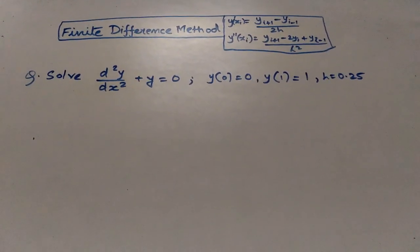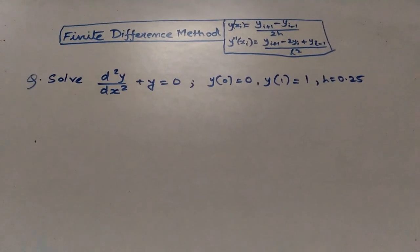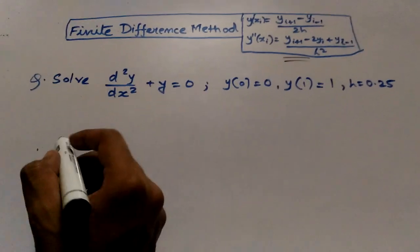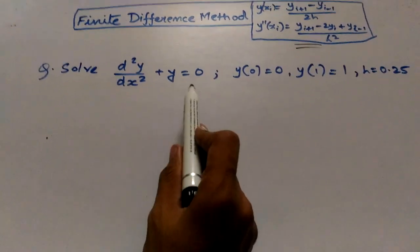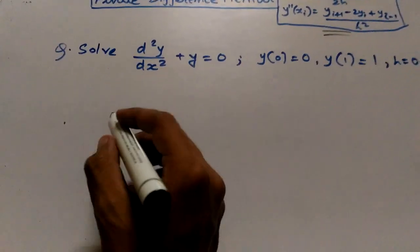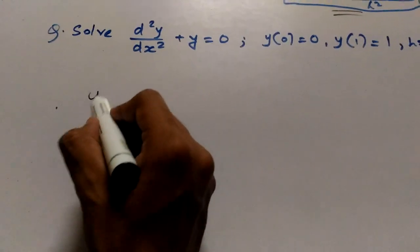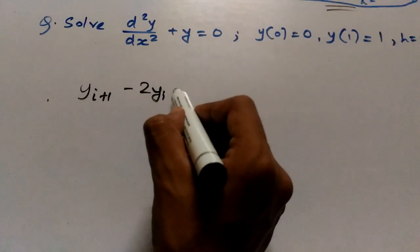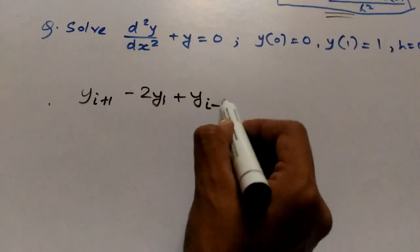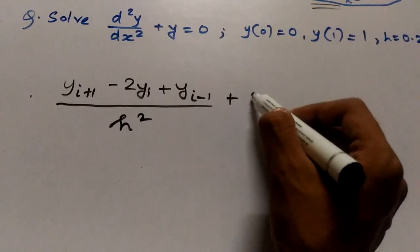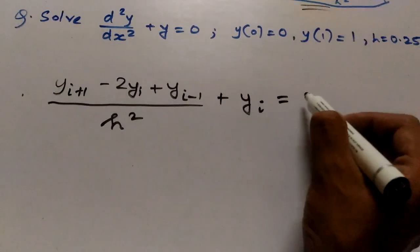Now our first task will be to replace the differential notation by this expression. So I will rewrite the differential equation in the form of y_i. It will be y_{i+1} minus 2y_i plus y_{i-1} divided by h² plus y_i equals 0.